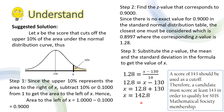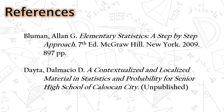The value of X is rounded off to a whole number since examination scores are usually given in whole numbers. So a score of 143 should be used as the cutoff — a candidate must score at least 143 to qualify for SHS Mathematical Society membership. That will be all. Thank you for watching. Please subscribe for more math lessons.